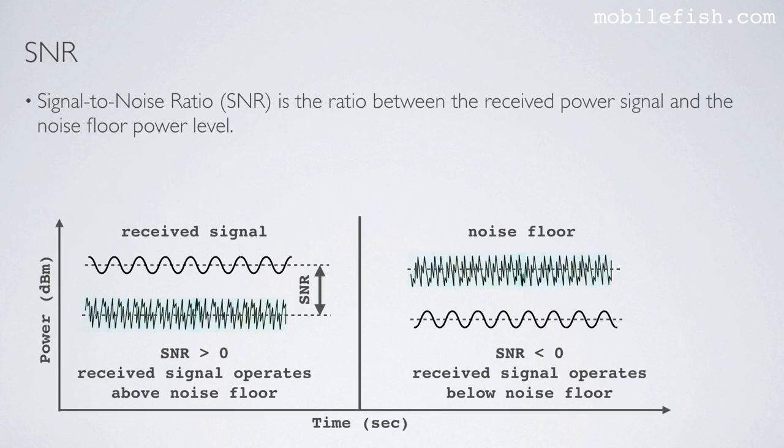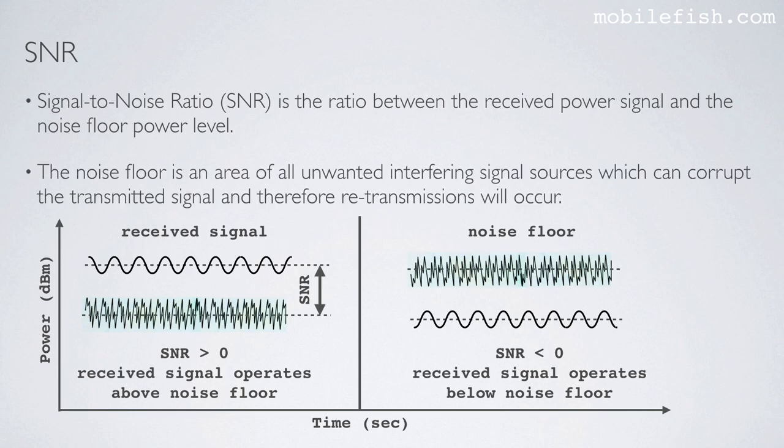The signal-to-noise ratio, or SNR, is the ratio between the receive power signal and the noise floor power level. The noise floor is an area of all unwanted interfering signal sources which can corrupt the transmitted signal, and therefore retransmissions will occur.